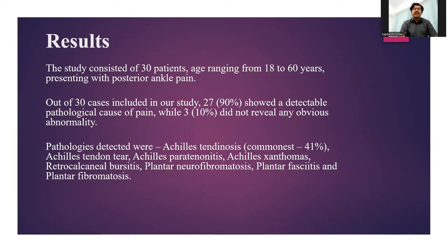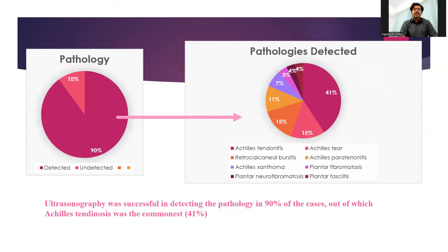Pathologies detected included Achilles tendonosis — the commonest at 41% — Achilles tendon tear, Achilles paratenonitis, Achilles xanthomas, retrocalcaneal bursitis, plantar neurofibromatosis, plantar fasciitis, and plantar fibromatosis. Ultrasonography was successful in detecting pathology in 90% of cases as shown in the pie chart, with Achilles tendonosis being the most common at 41%.